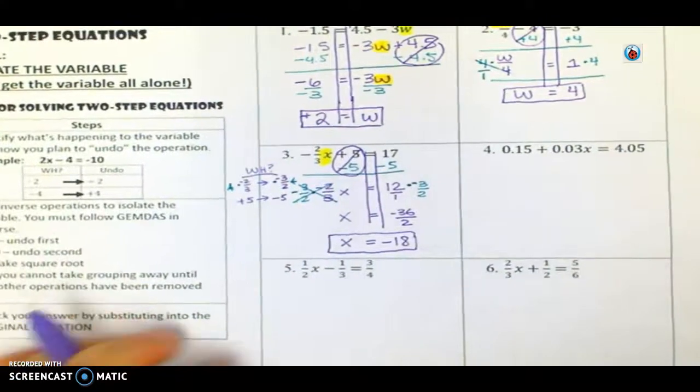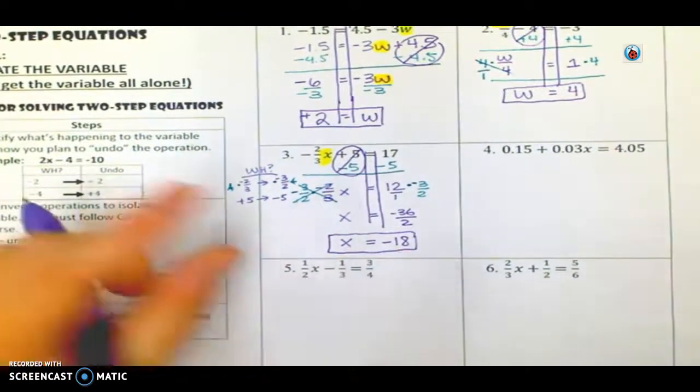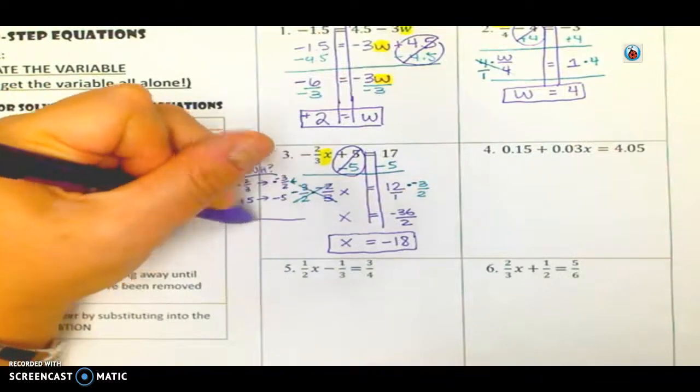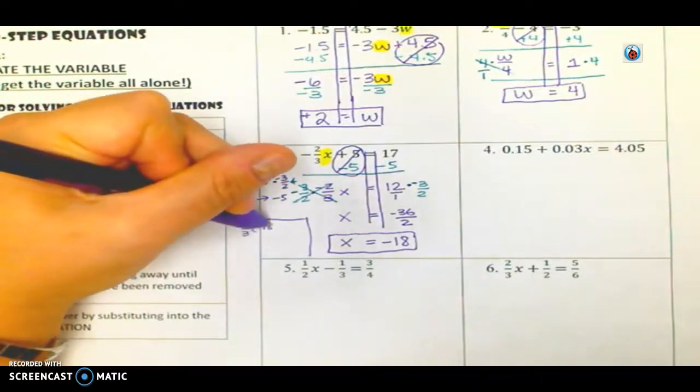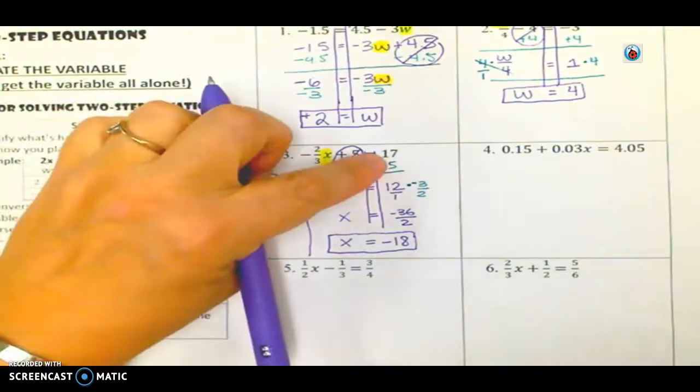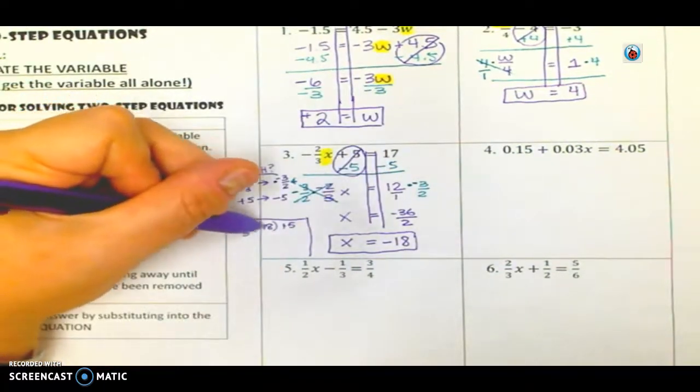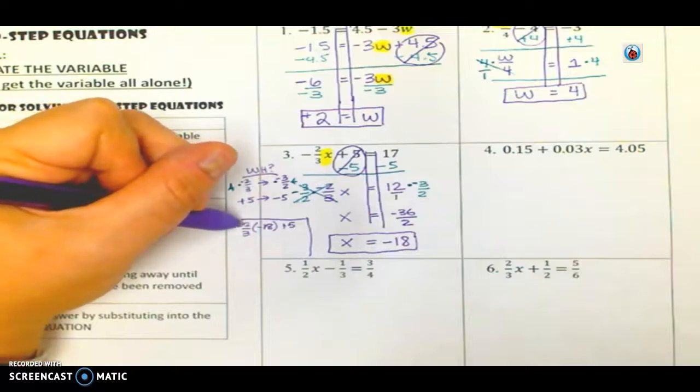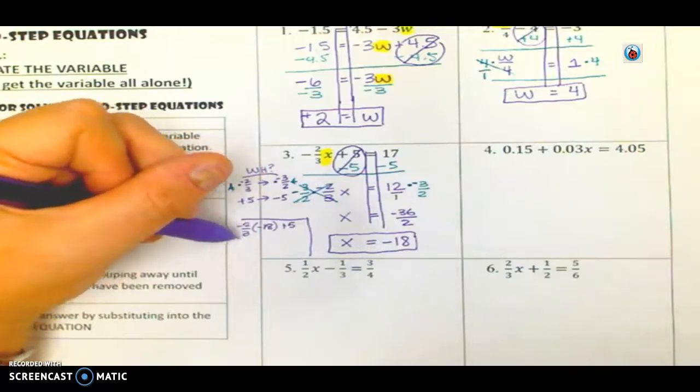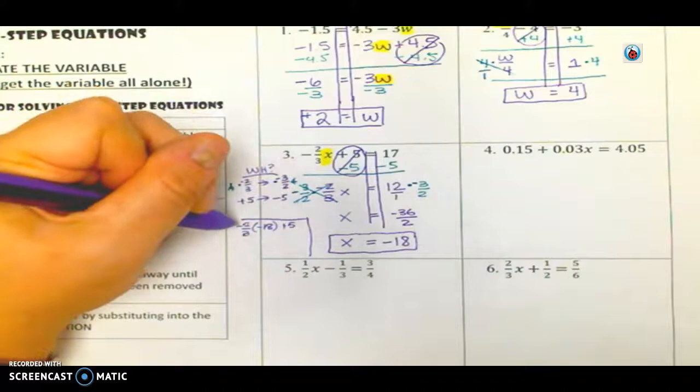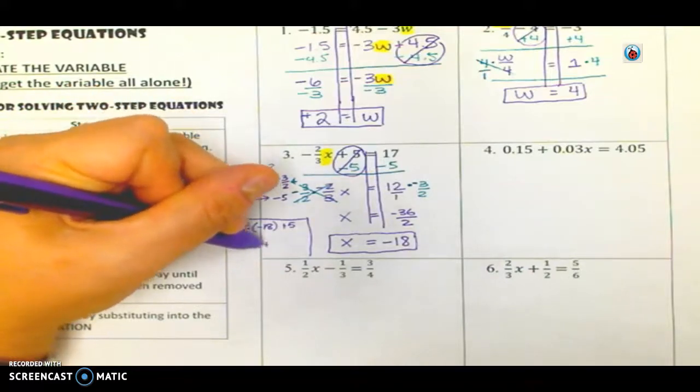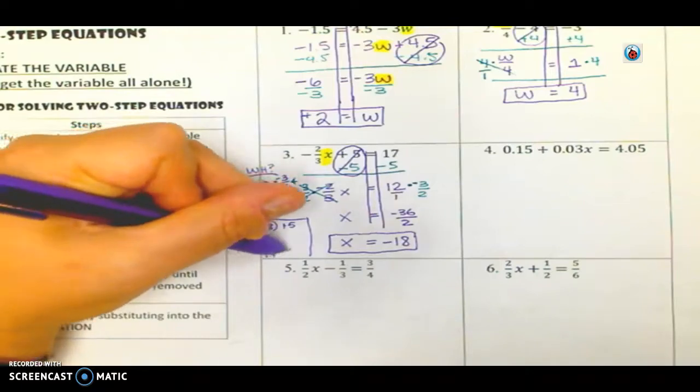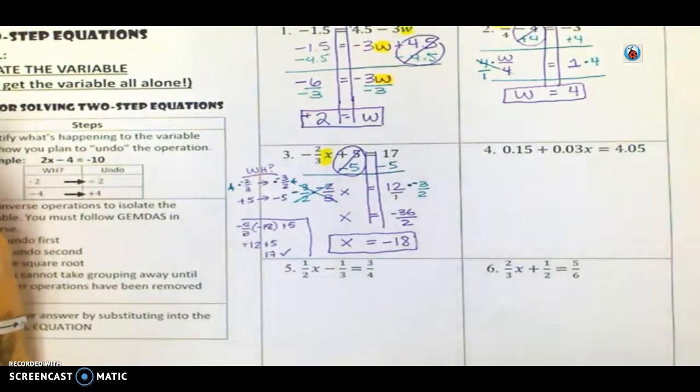The 2 is going to cancel the 2 out. So I've got to do the same thing over here. 3 over 2. Negative 3 over 2. Negative 2, negative 2. That's going to cancel out. And I'm going to get x equals, and we can just throw this over 1 to help us out there. So, negative 36 over 2, and I can simplify that further. So I get x equals negative 18. And then again, I could go back and plug that in. Negative 2 thirds times negative 18 plus 5. I'm supposed to get 17. Well, 2 times 18 is 36, and 36 divided by 3 is 12. And that's positive, because negative times negative. So I get a positive 12 plus 5, and I get 17, which means I got my answer correct.